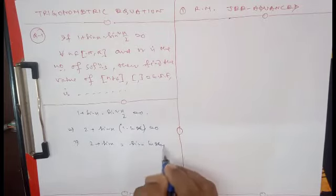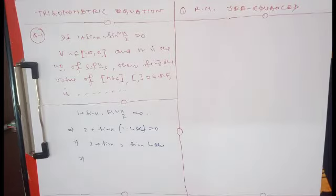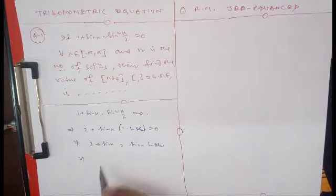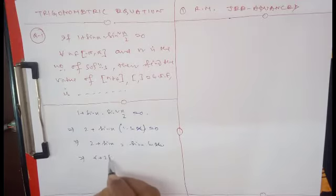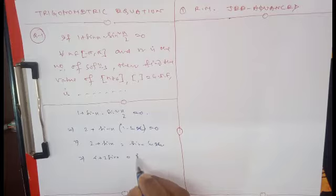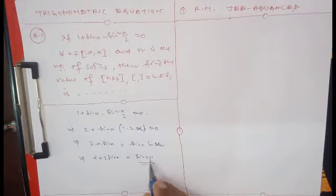Multiply both sides by 2 again. We get 4 + 2sin(x) on the left side, and 2sin(x)cos(x) = sin(2x) on the right side. So the equation becomes 4 + 2sin(x) = sin(2x).